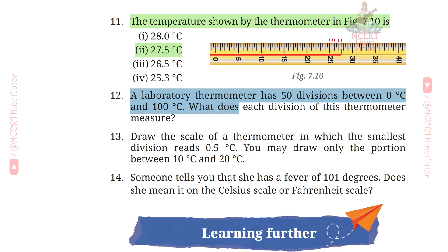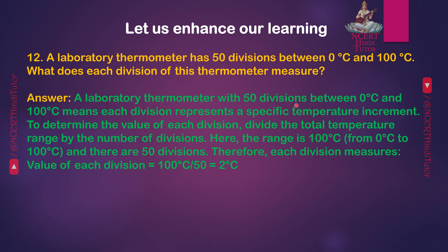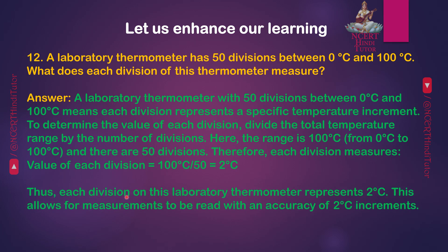Answer: A laboratory thermometer with 50 divisions between 0 and 100 degrees Celsius means each division represents a specific temperature increment. To determine the value of each division, divide the total temperature range by the number of divisions. The range is 100 degrees Celsius and there are 50 divisions. Therefore, each division equals 100 divided by 50, which equals 2 degrees Celsius. Each division on this laboratory thermometer represents 2 degrees Celsius.